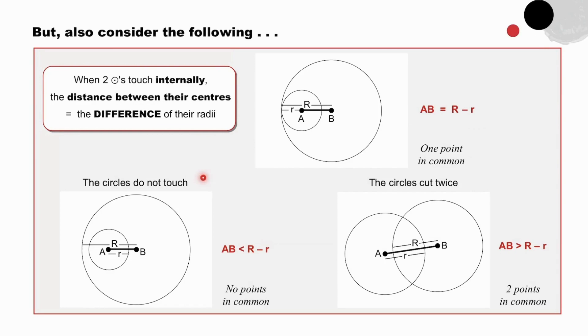If the circles do not touch, then the distance between their centers is less than the difference of the radii. If they cut twice, then the distance between the centers is greater than the difference of their radii. One point in common, two points in common, and no points in common.